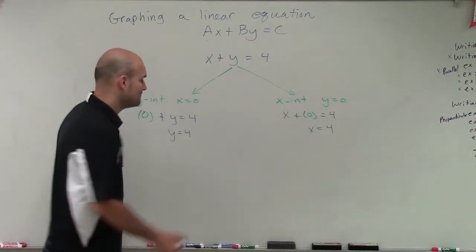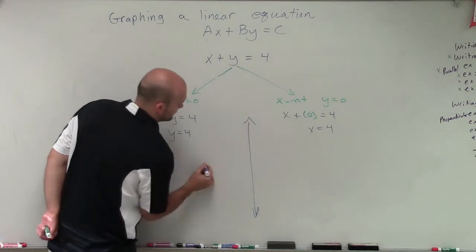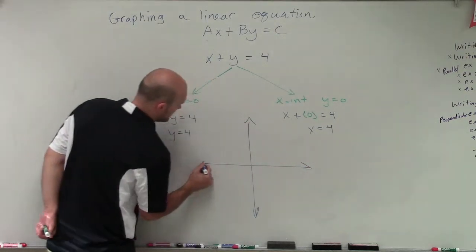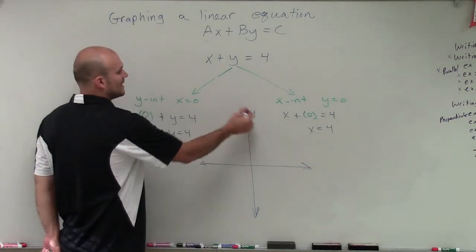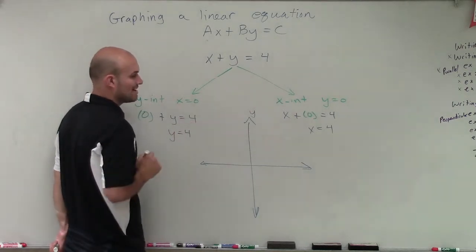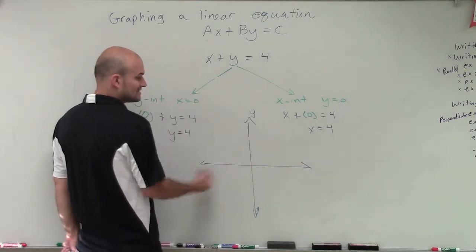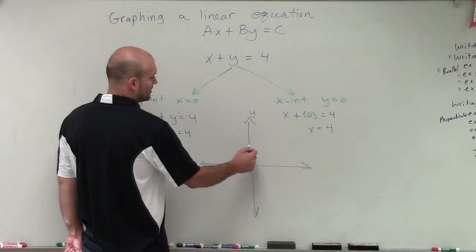So now to graph this, all we need to do is find the y-intercept, which is going to be on the y-axis. The y-intercept is where the graph crosses the y-axis. So I'll go up 4 units since it's positive: 1, 2, 3, 4.